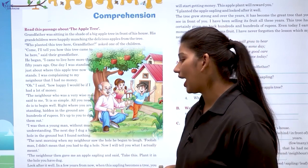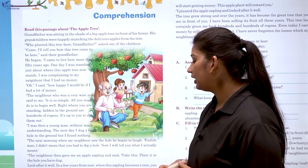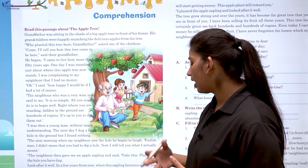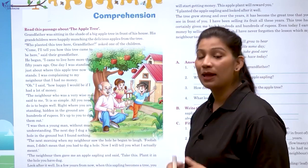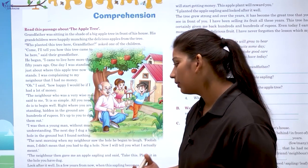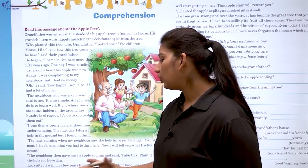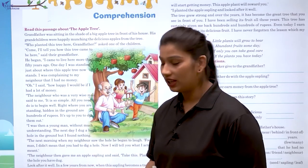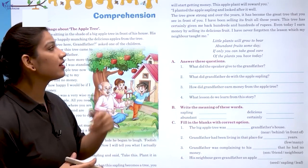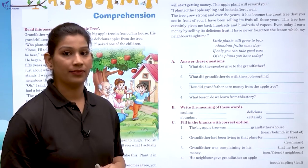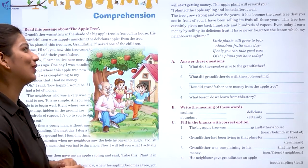'Foolish man, I didn't mean that you had to dig a hole. Now I will tell you what I actually meant.' The neighbor then gave an apple sapling and said, 'Take this, plant it in the hole you have dug. Look after it well. When this sapling becomes big, you will start getting money. The apple plant will reward you.'